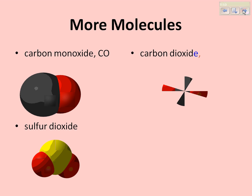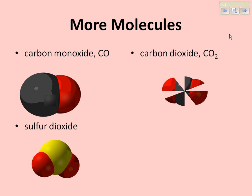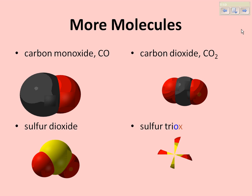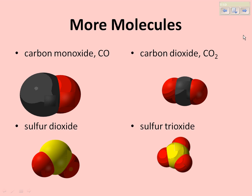We have carbon dioxide, CO2, which you know. Notice we're starting prefixes on some of the words — we only do that with molecules. Sulfur trioxide has sulfur with three oxygens, so it would be SO3.